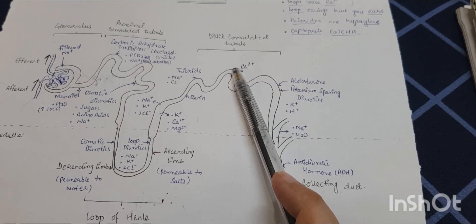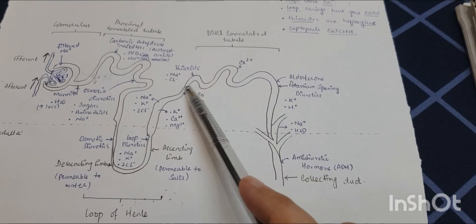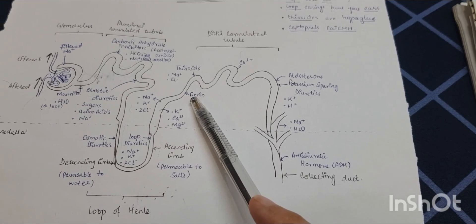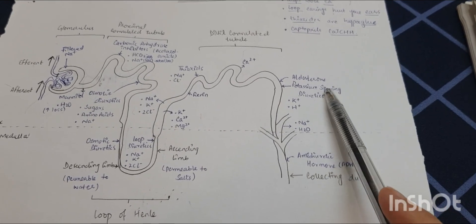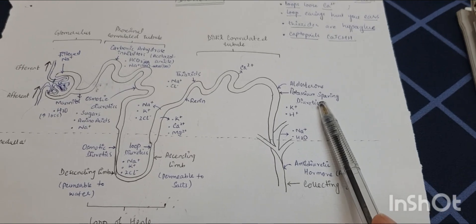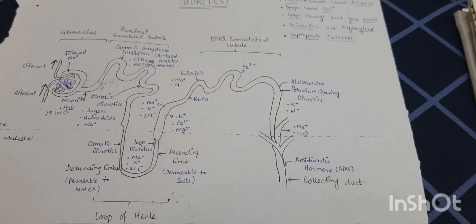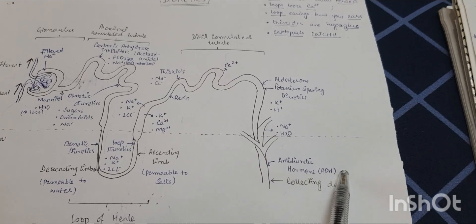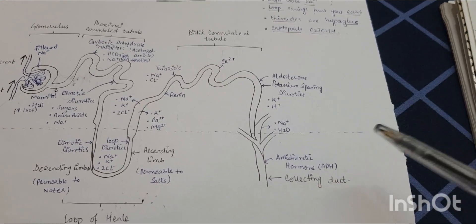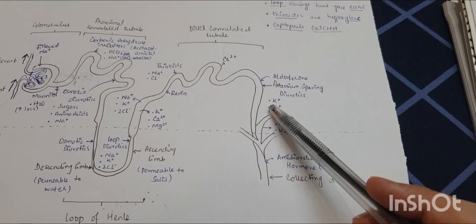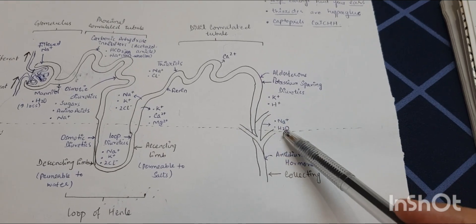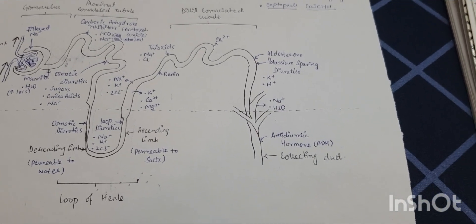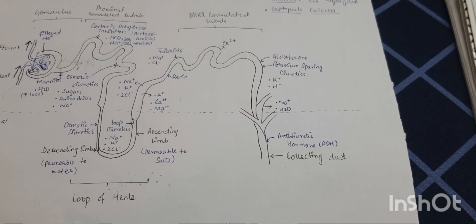Renin also acts on the distal convoluted tubule. Aldosterone and potassium-sparing diuretics, as well as the anti-diuretic hormone, act on the collecting tubules, resulting in potassium and hydrogen reabsorption while causing sodium and water excretion.